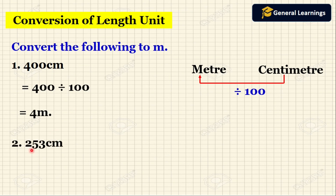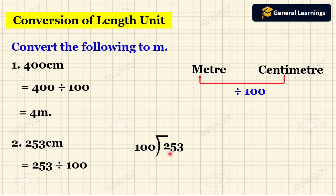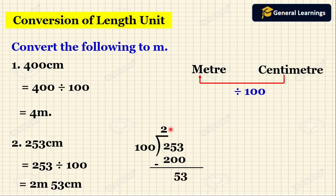Now we will see another example. Here they have given 253 centimeters. We need to convert this to meters by dividing by 100. So 253 divided by 100: 200 goes into 253 twice giving 200, so we write 2 in the quotient and subtract 200 from 253, leaving 53. So the 2 is 2 meters and the remainder 53 is 53 centimeters. So while converting 253 centimeters to meters we get 2 meters 53 centimeters.